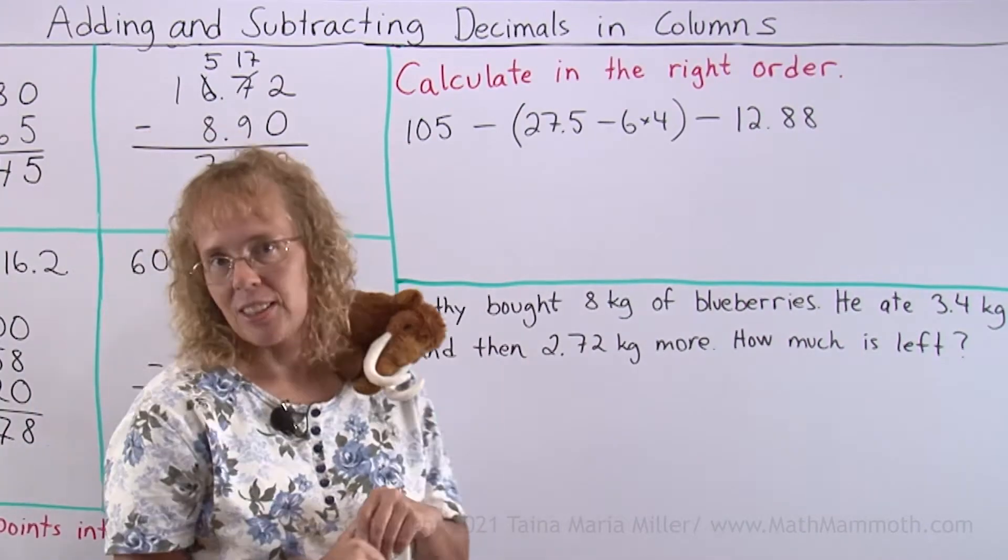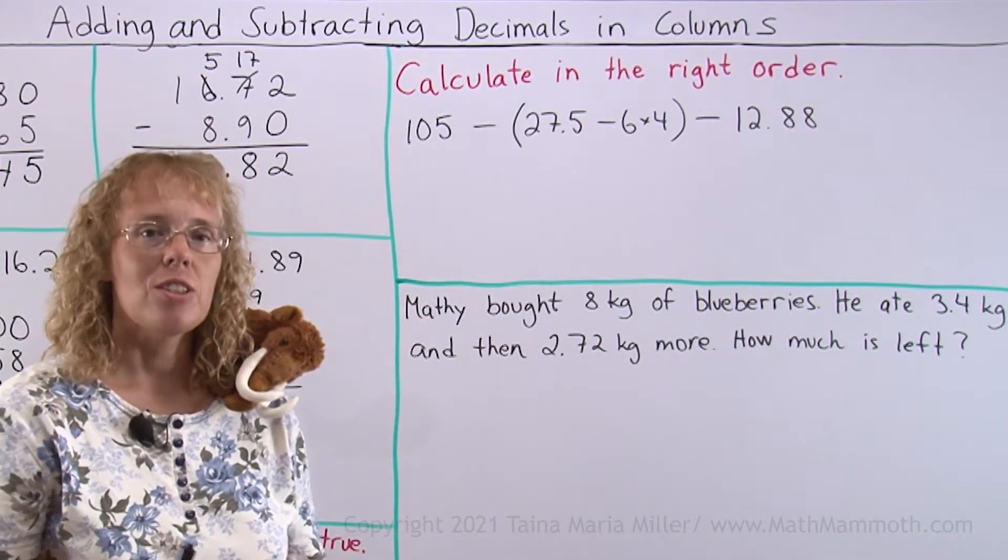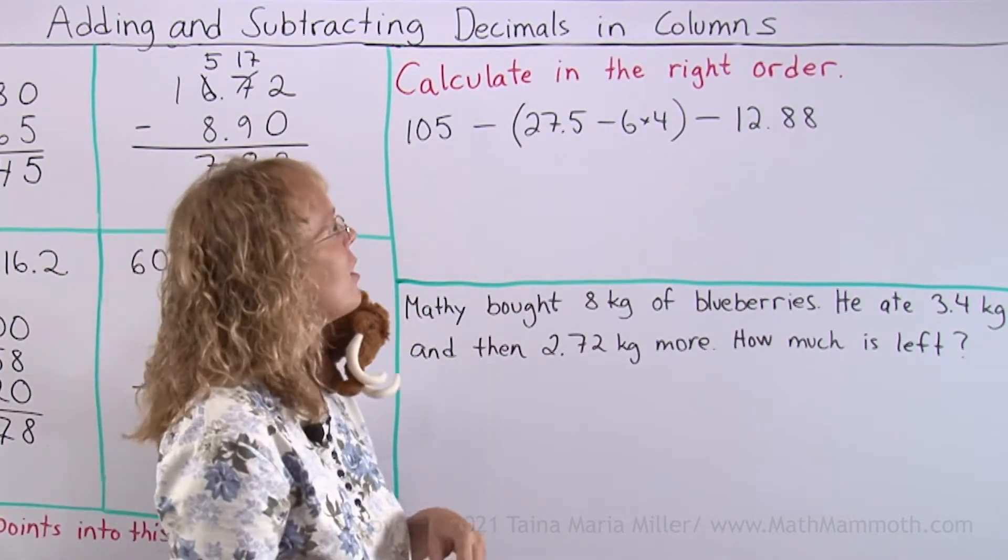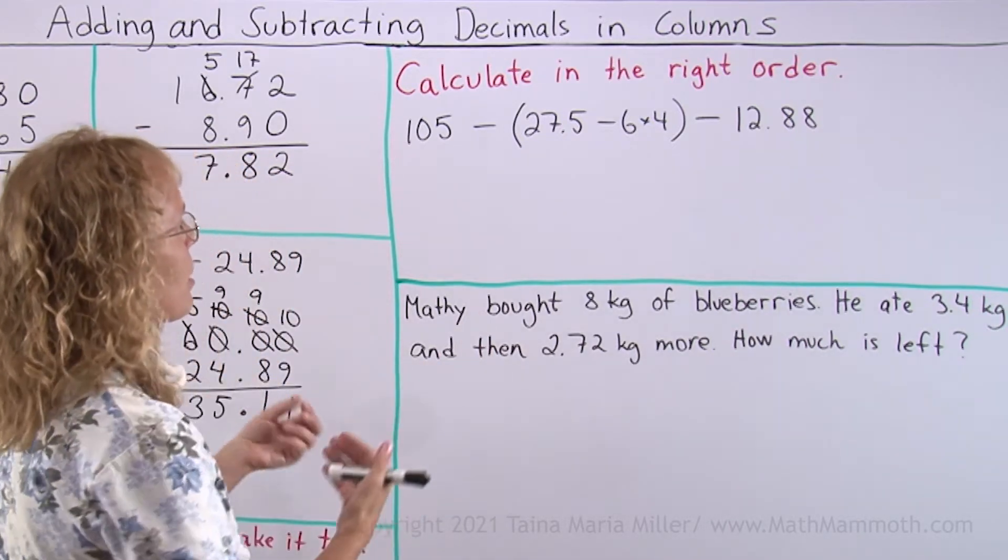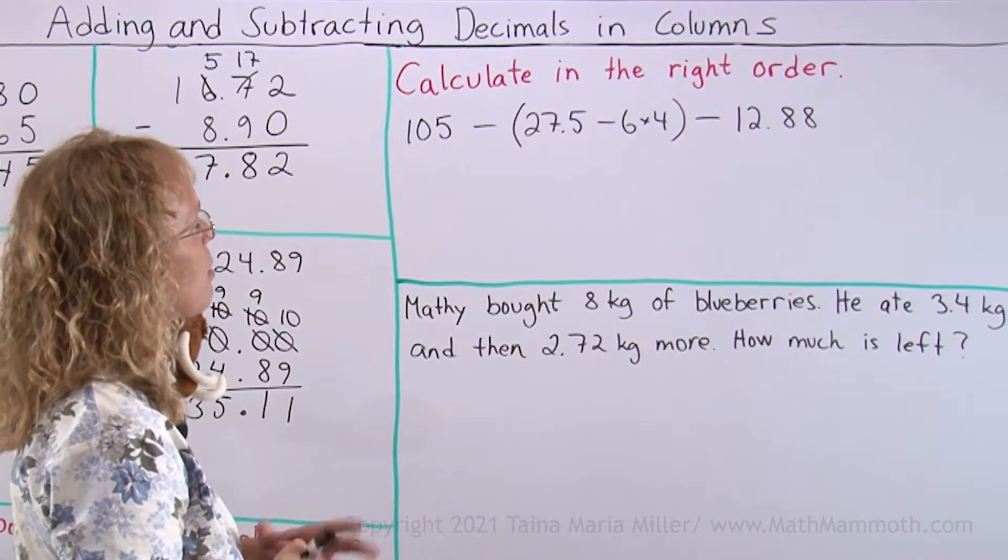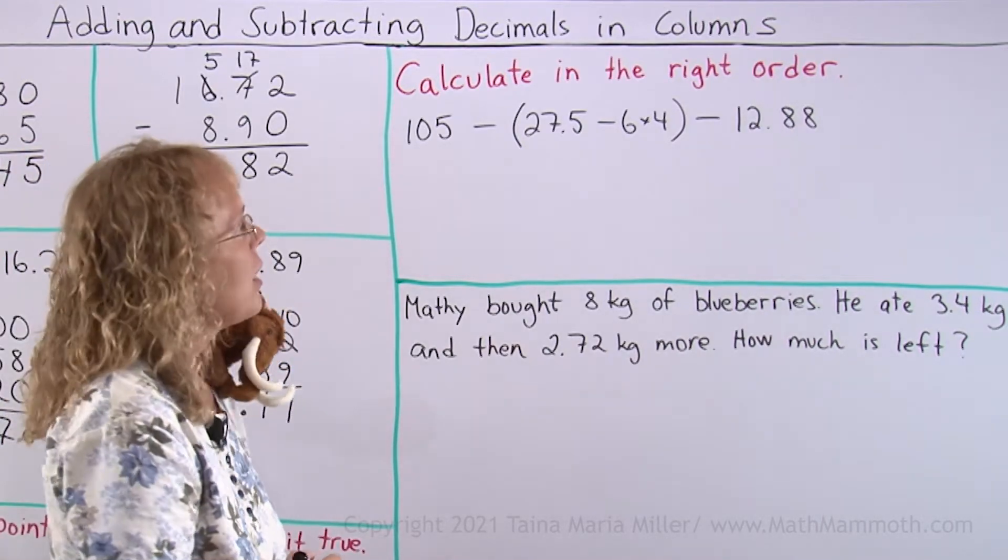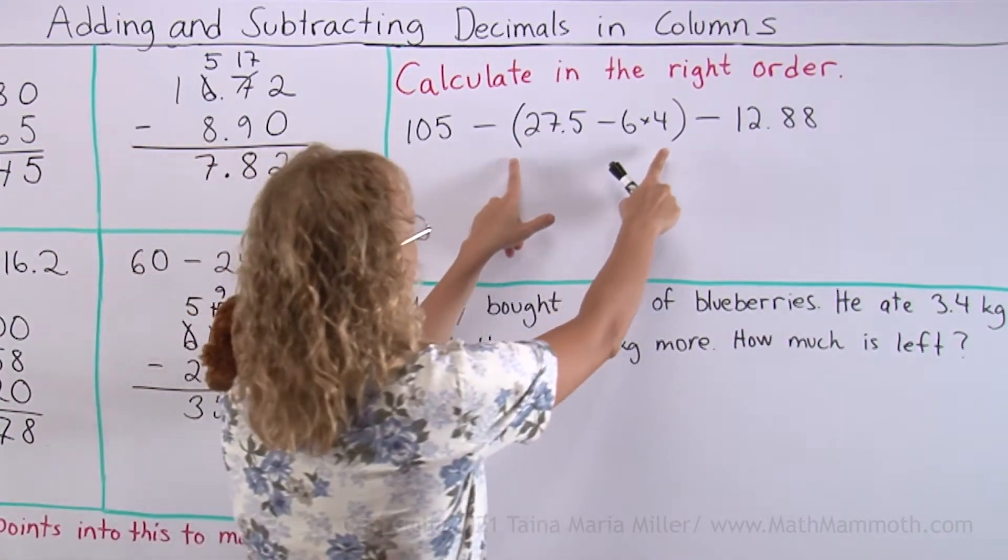Calculate in the right order. Now this is a problem about order of operations, so we can actually review that here as we study decimals. Which operation would be done first? It is parenthesis and multiplication and subtraction. We need to do parenthesis first.